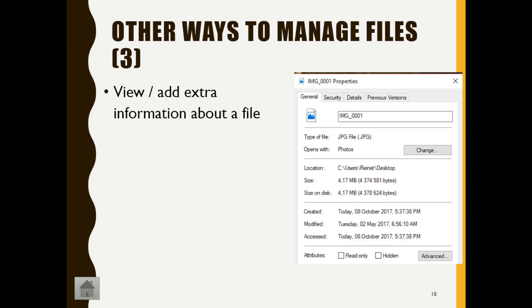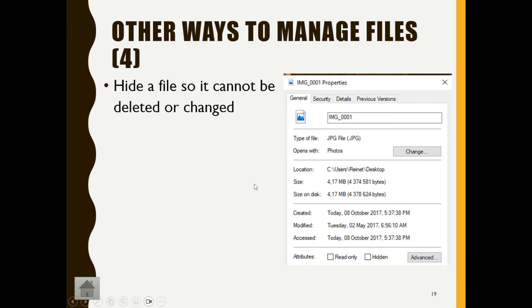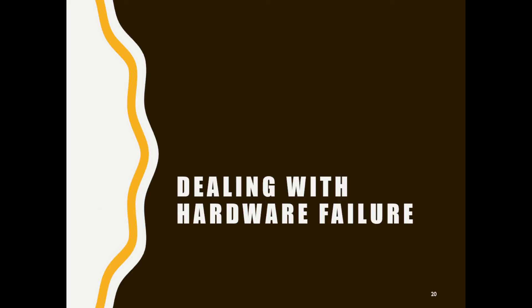We also deal with file properties and attributes. When we talk about properties, we're talking about metadata — who created the file, how long they worked on it, whether a camera was used, and so on. We can even hide files using attributes. We can also prevent the contents from being changed by checking 'Read Only.' These are the ways we can manage our files on our PC.